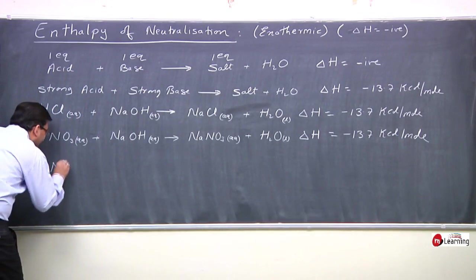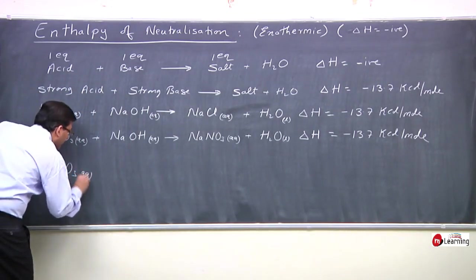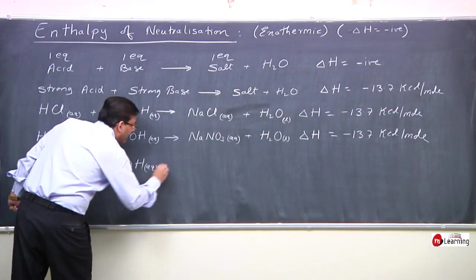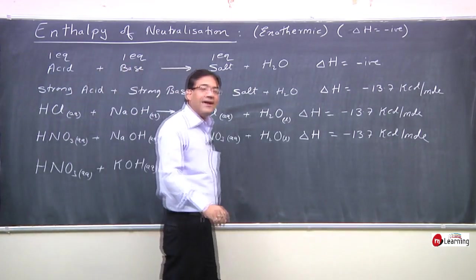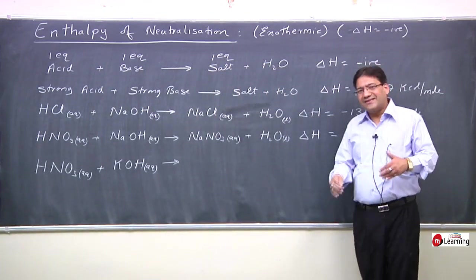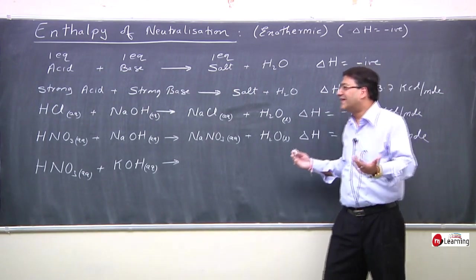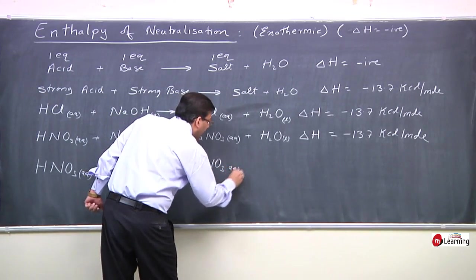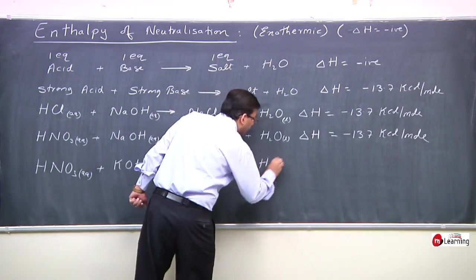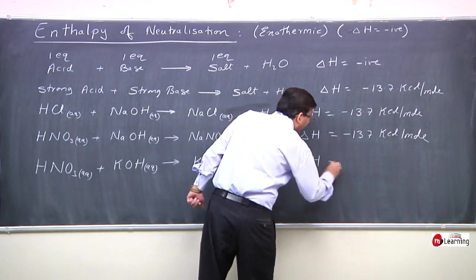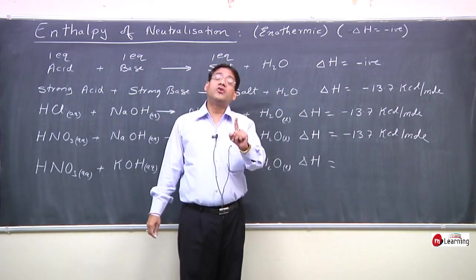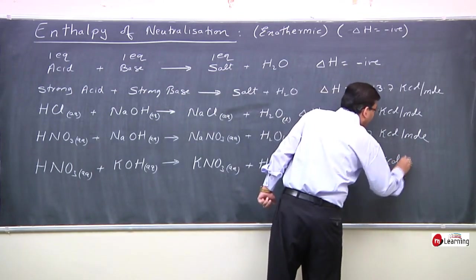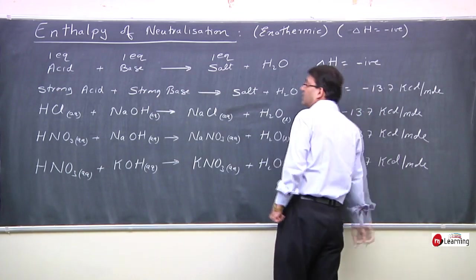Similarly, if we change the base and replace NaOH with KOH, the neutralization reaction will change and the salt produced will now be KNO₃, but the enthalpy of neutralization shows no difference — it will still be minus 13.7 kcal per mole.